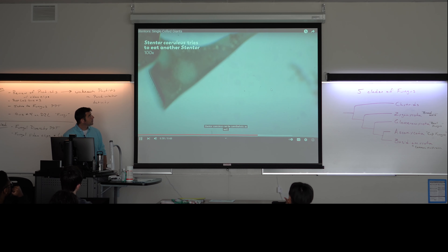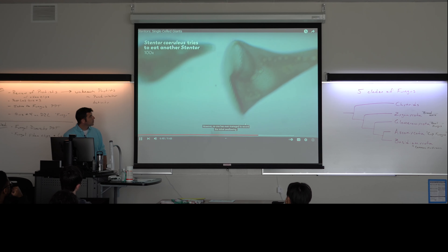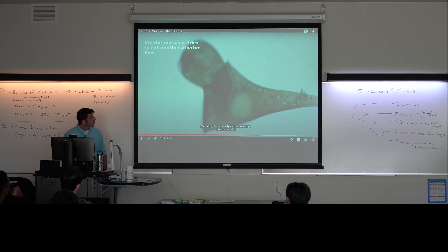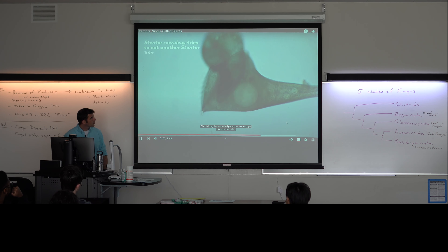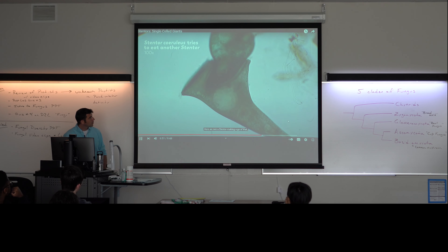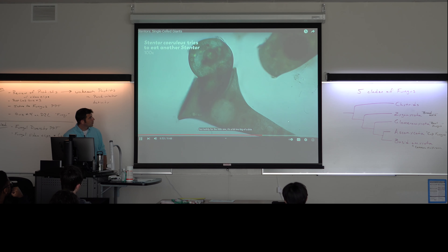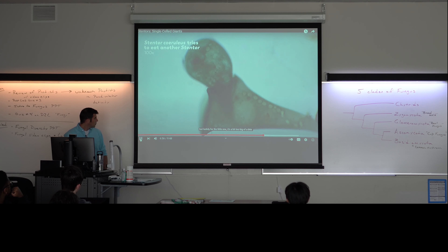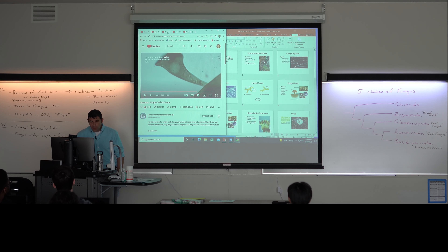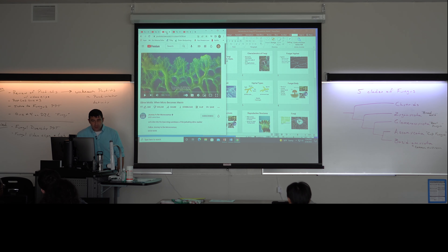Stentor coeruleus can be cannibalistic as well, though no one has ever managed to record the initial swallowing — likely because the light of the microscope disturbs the cells. You can see one stentor making a go of that, but luckily for the little one, it's a bit too big of a bite. I'll pull away from that one for just a second because there is also another one that I wanted to introduce — we didn't get to see very well last time — and that's the movement of that plasmodial slime mold.